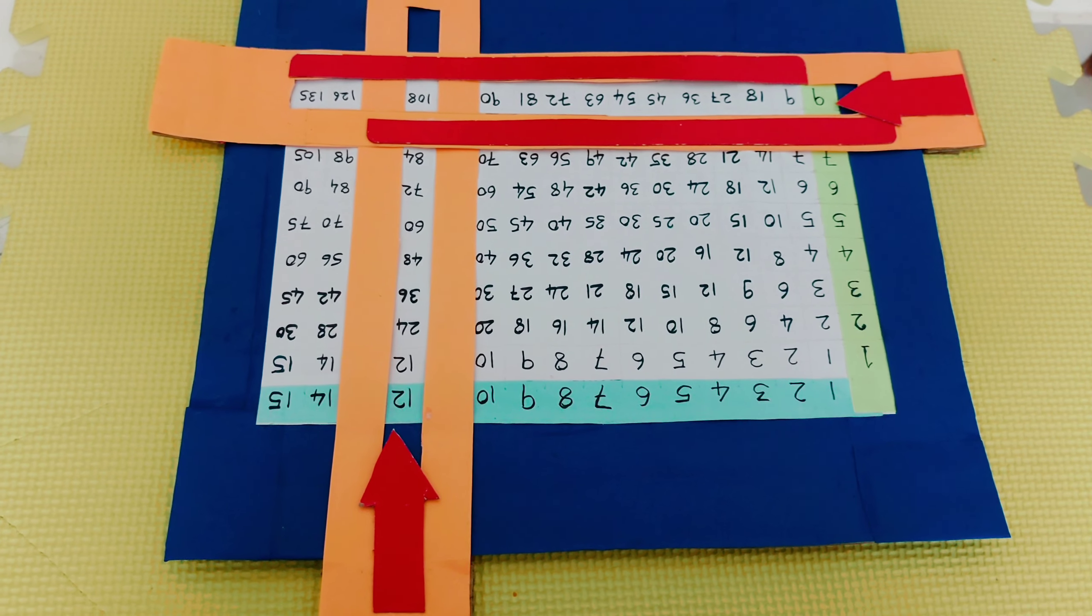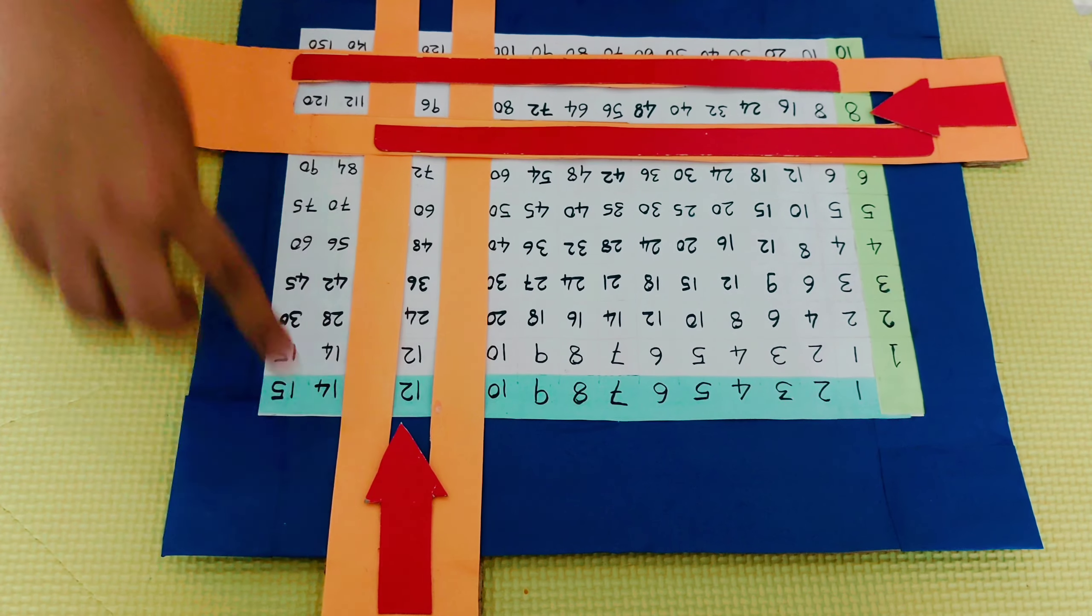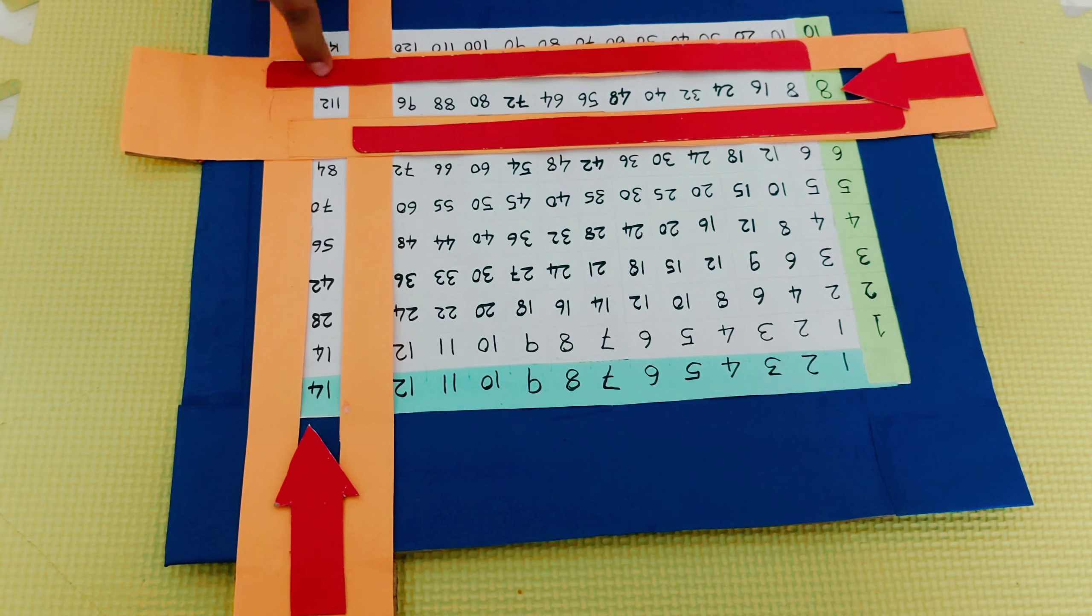What is 8 times 14? It is 112. Now watch making of maths model.